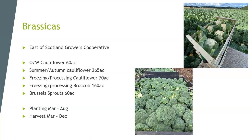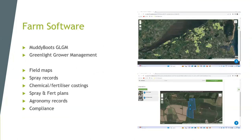A new venture for us this year is Brussels sprouts — we're trying 60 acres, planted in April, and they're looking fairly good. Harvest comes next month so it's quite a long season — basically year-round on the brassicas, planting from March to August and harvesting from March all the way through to early December. The farm software we use is Green Light — we've always called it that, whether it was Muddy Boots, Green Light Grower Management, or now Telus Farm Management.